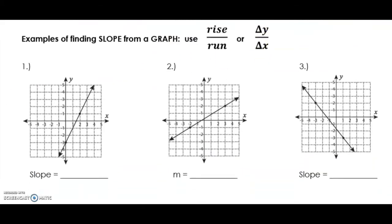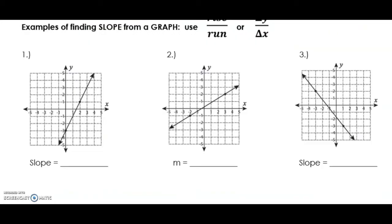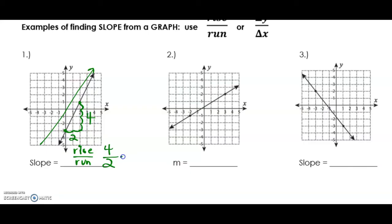We need to find two good points on the graph. I've highlighted some good points here. Let's set up our fraction — the rise divided by the run. Between these two green points, the rise is one, two, three, four — so the rise is four, making my numerator four. The run is one, two — so the run is two. This line is rising from left to right, so the slope is going to be positive.